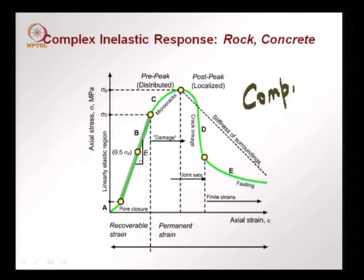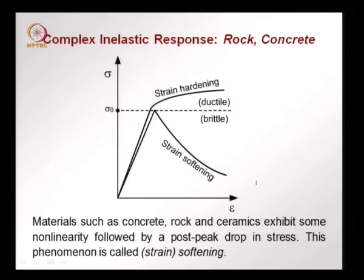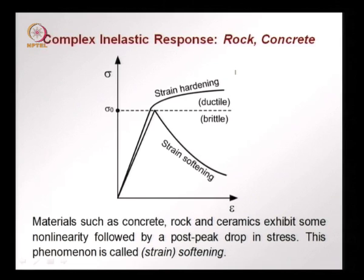This behaviour where the stress drops after a peak is called softening. As opposed to what we saw in metals where the curve goes up and we call it strain hardening, this is called strain softening. Any behaviour below a plastic plateau is brittle and is called strain softening, and what is above a plastic flat behaviour is called strain hardening. Materials such as concrete, rock, and ceramics exhibit this type of nonlinearity where we have a post-peak drop in stress.